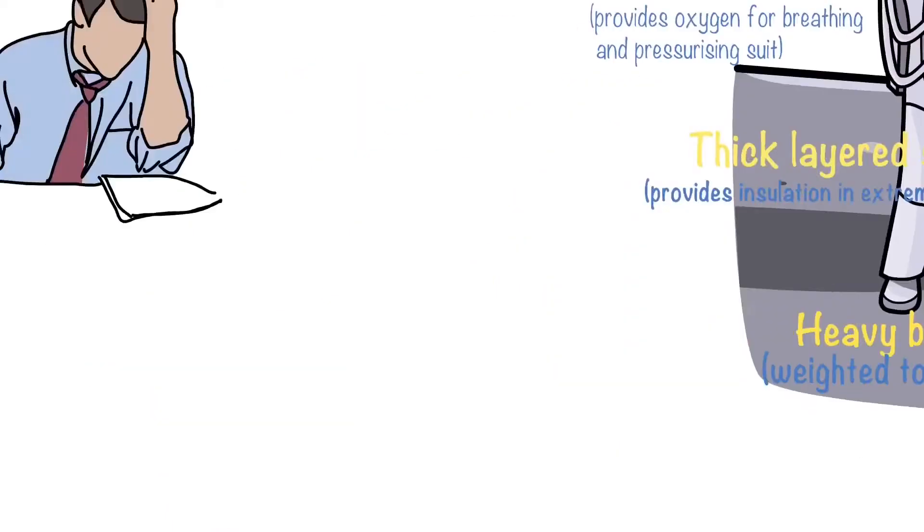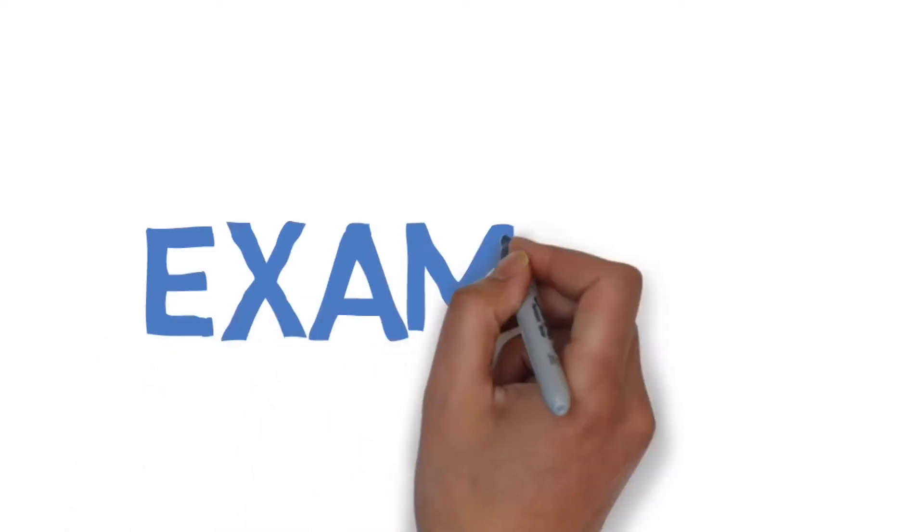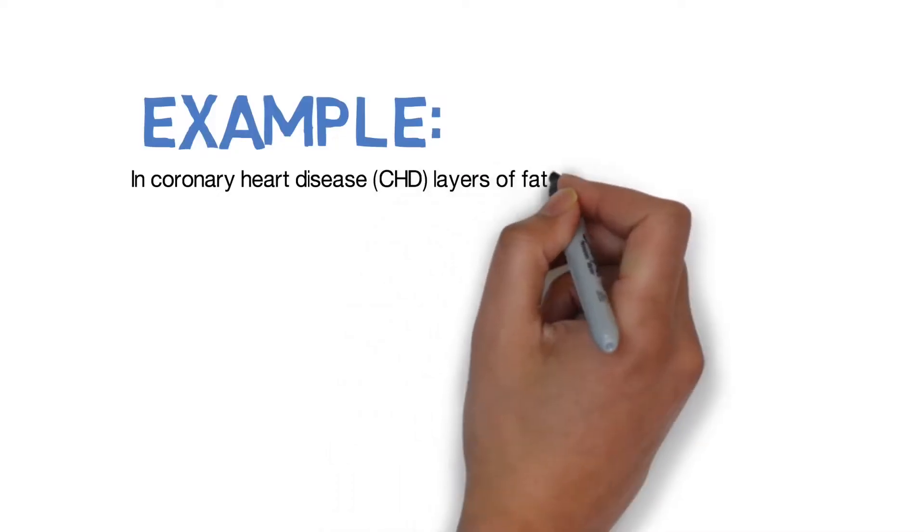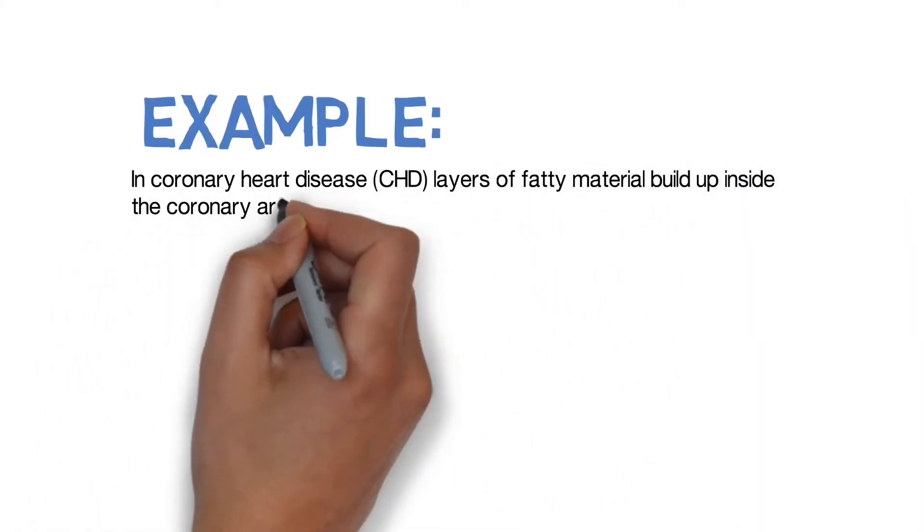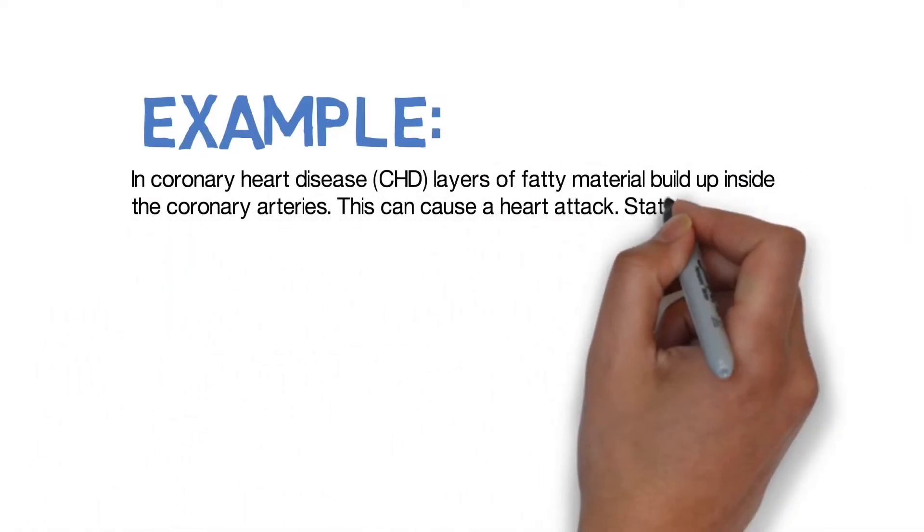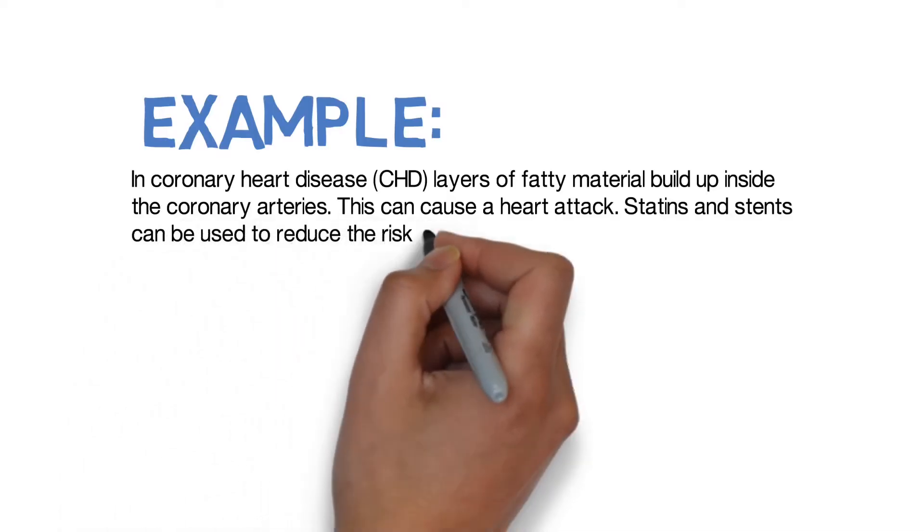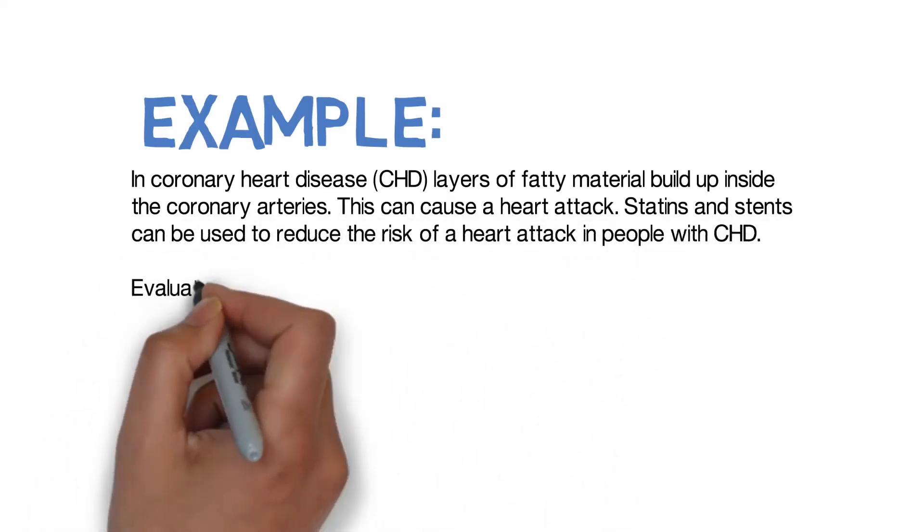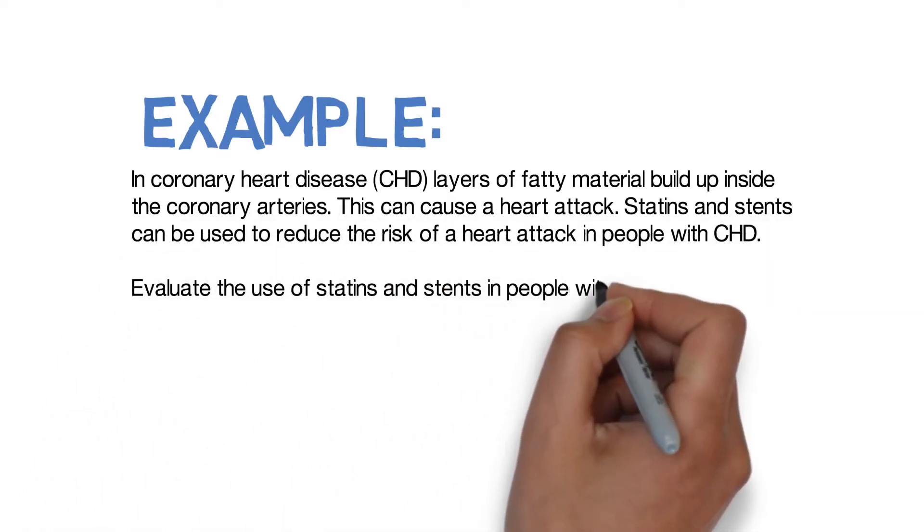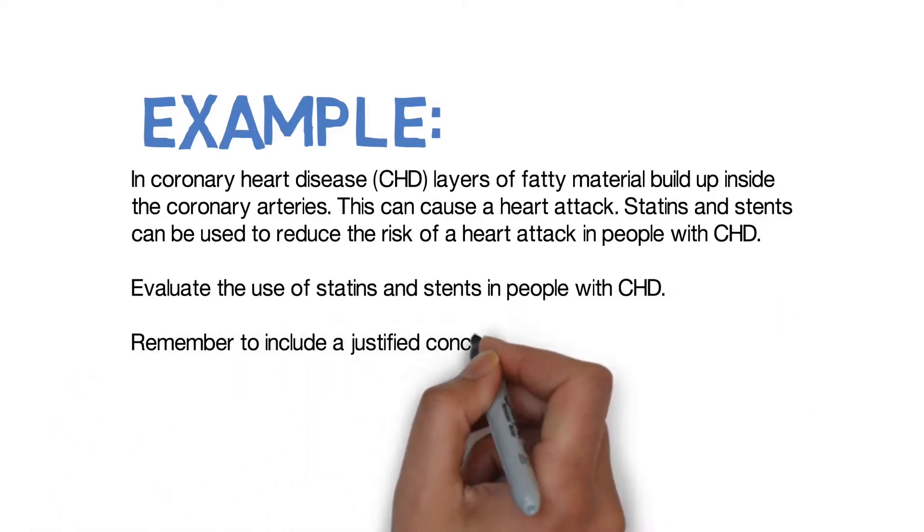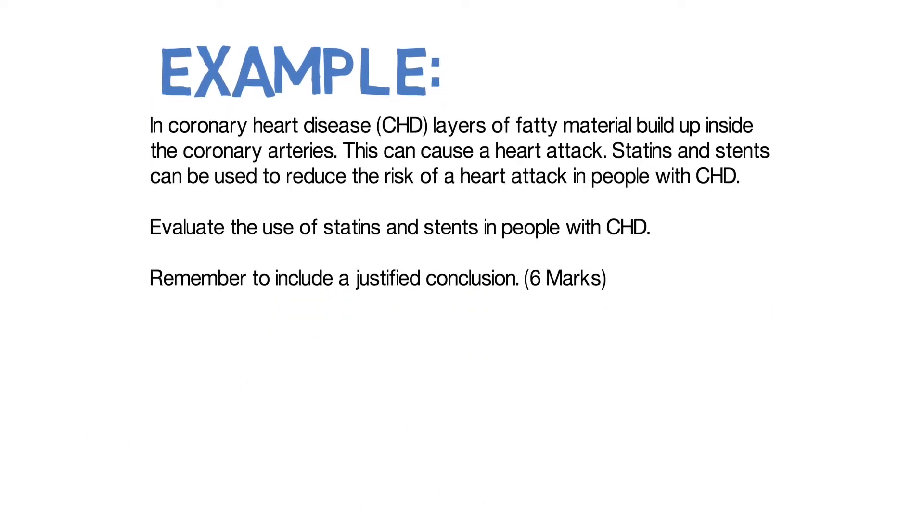Let's look at another example. This is an actual exam question. In coronary heart disease layers of fatty material build up inside the coronary arteries. This can cause a heart attack. Statins and stents can be used to reduce the risk of a heart attack in people with coronary heart disease. Evaluate the use of statins and stents in people with coronary heart disease. Remember to include a justified conclusion.